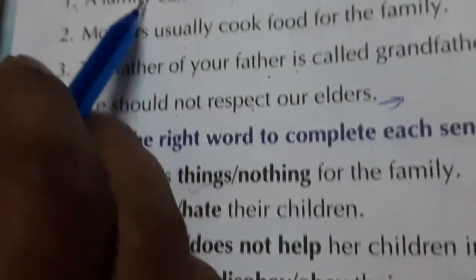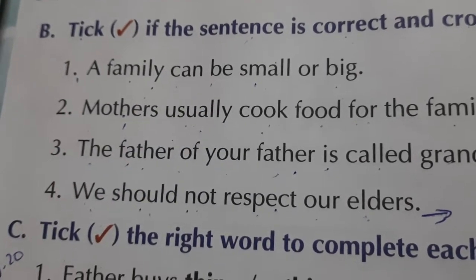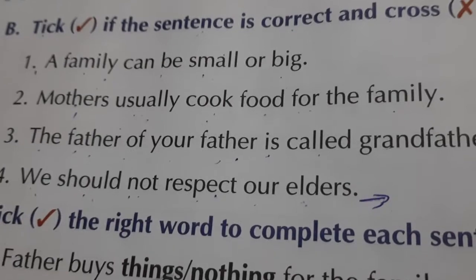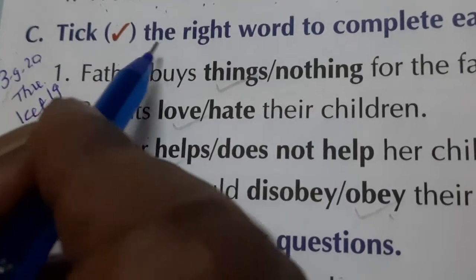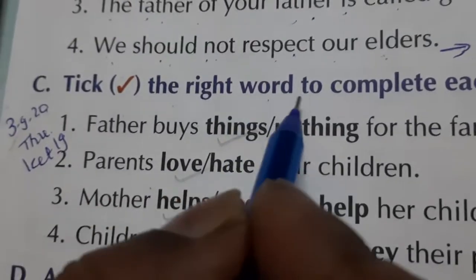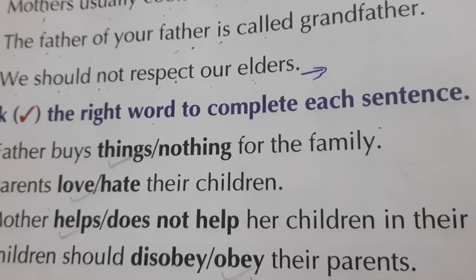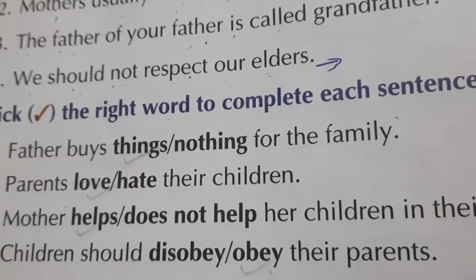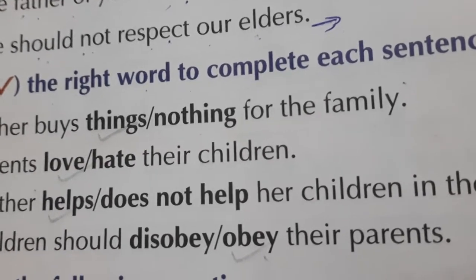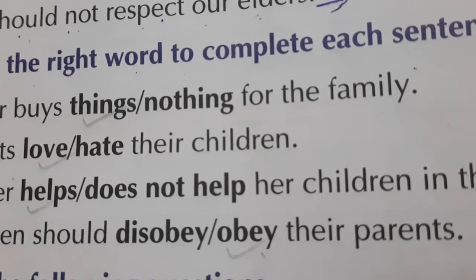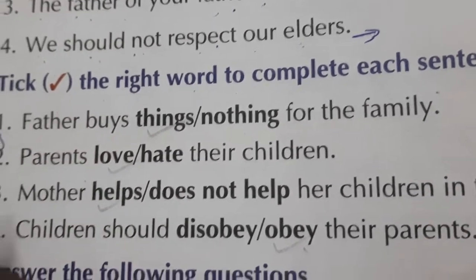In the previous lecture, we completed question B — tick the correct sentence and cross the wrong. Now, question C: tick the right word to complete each sentence. Here we have a sentence and there are two words. You tick the right word to complete the correct sentence, so you can write the right word. First sentence I am reading.